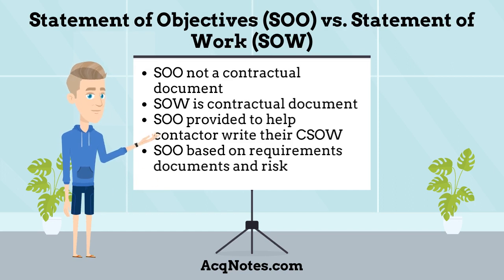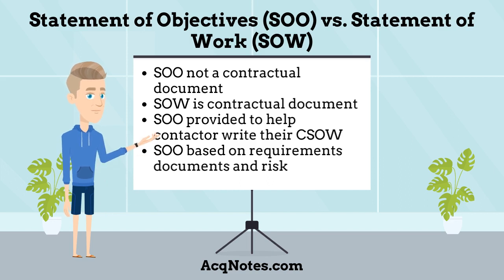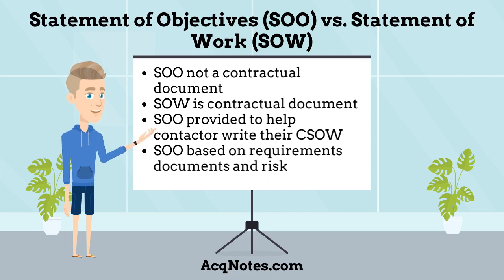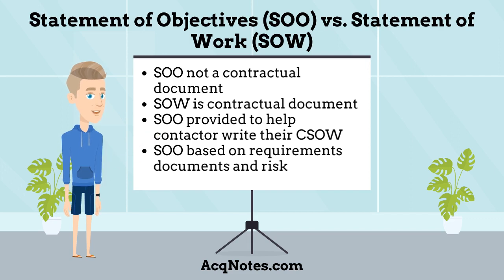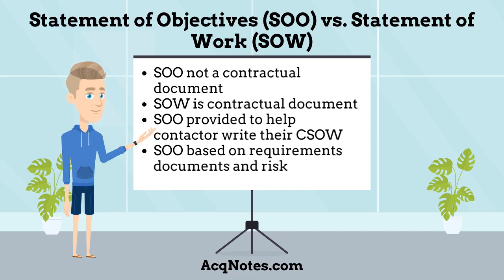What is the difference between a Statement of Objectives versus a Statement of Work? The biggest difference is that the SOO is not a contractually binding document, whereas the SOW is. The SOO is provided in the solicitation in lieu of a government-written Statement of Work. In this approach, the contractor's proposals contain their statements of work and performance metrics and measures, which are based on their proposed solutions. The SOO is also focused on risk, where the Statement of Work is not.